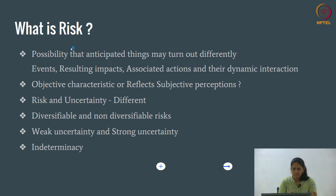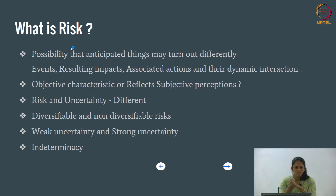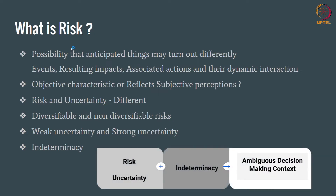Coming to uncertainty — uncertainty is when you don't have knowledge about what is going to happen in the future. If the sponsors are ignorant about the information, if they have no information, then it leads to uncertainty. Weak uncertainty is when you have information but are not able to do anything; strong uncertainty is when you don't even have the information. Indeterminacy refers to events you think are going to happen that depend on external and internal factors, making the future indeterminate. Risk plus uncertainty combined with indeterminacy gives an ambiguous decision-making context.